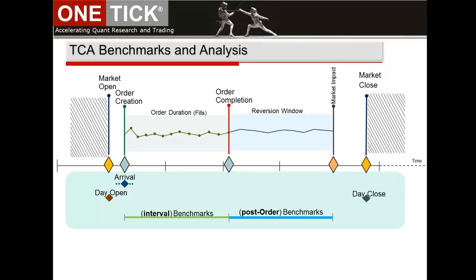The main challenge of TCA is to determine whether a trade price is high or low given market conditions at the time the order was processed. One way to determine that is to measure market impact by comparing multiple price points: the arrival price, an order's completion price, and the impact price point, which is normally considered the market price at a time equal to the duration of an order. Let's look at a few examples of this.